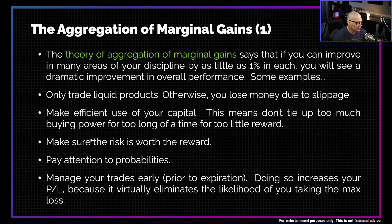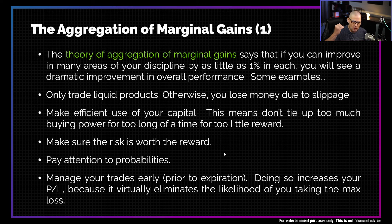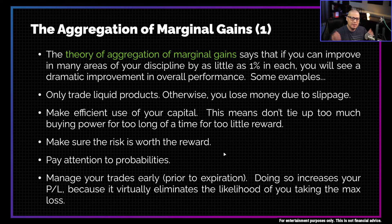The next area you could improve on is making sure the risk is worth the reward. Look at the buying power requirement — consider that your risk, because it's a good representation of your max loss. Then look at your maximum possible reward. Does that reward fit with the risk you're taking? If it seems OK, take the trade. If it doesn't seem OK, don't take the trade.